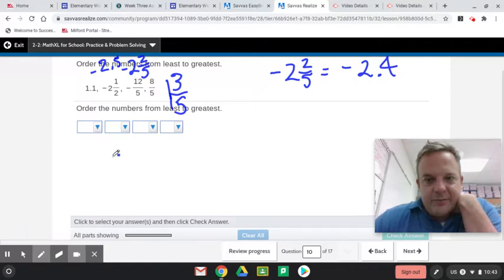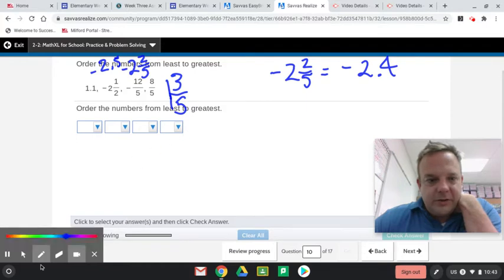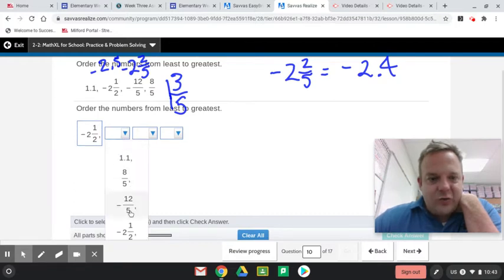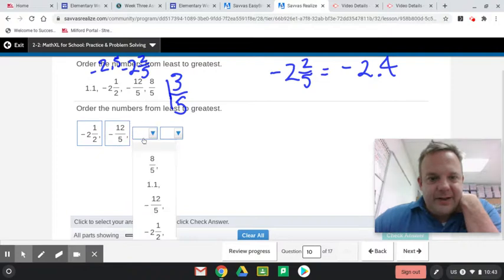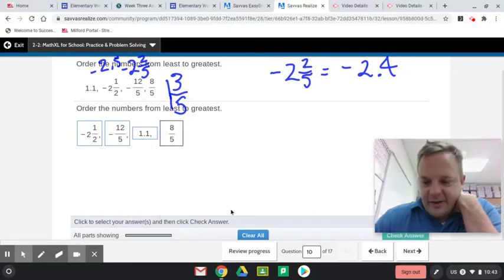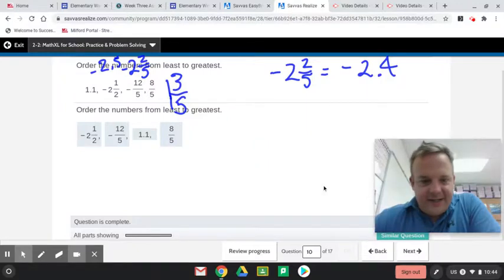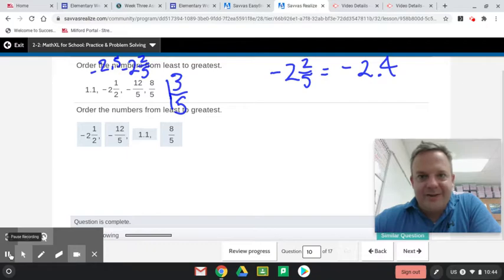So what we have to do is go least to greatest. So the least one here, the furthest from 0, furthest left, is the negative 2.5. So the negative 2 and 1 half. Then you have the negative 12-fifths. And then finally, 1.1, and then the 8-fifths. I'm going to have to do a two-parter on this one. So we'll publish this one, and I'll get the second part out to you later. I'll see you guys.